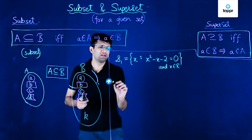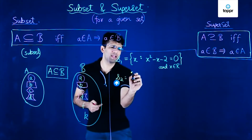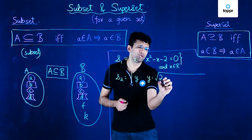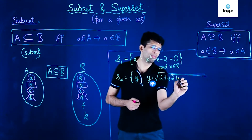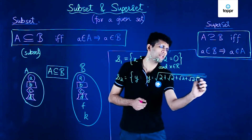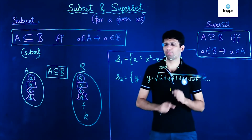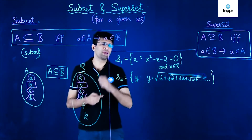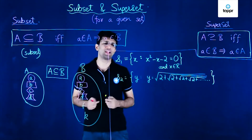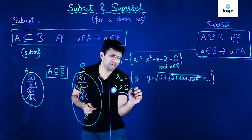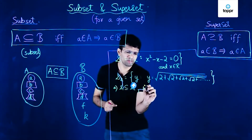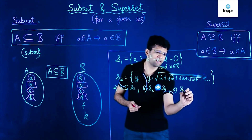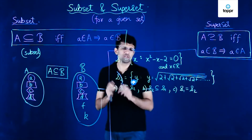Similarly, we are given another set S2 which consists of elements Y such that Y equals the square root of 2 plus the square root of 2 plus the square root of 2, and so on, where all these nested square roots extend to infinity. The options given are: S1 is a subset of S2, S2 is a subset of S1, or S1 and S2 are exactly equal, and we have to check which is correct.